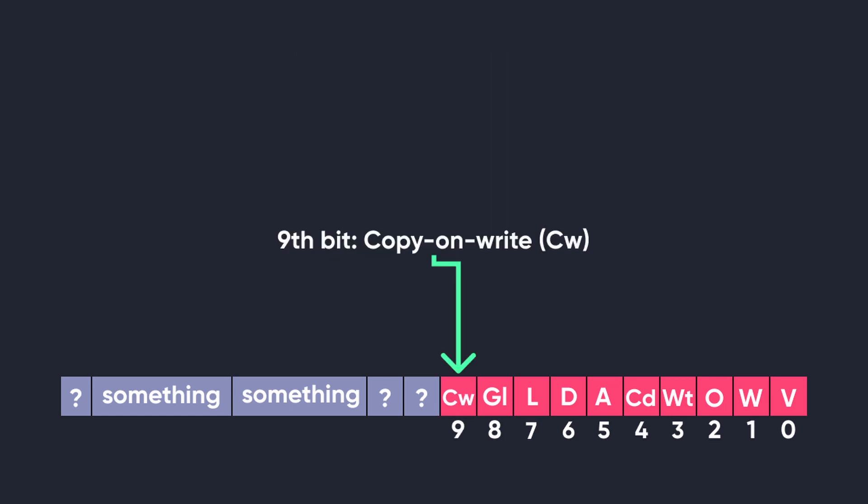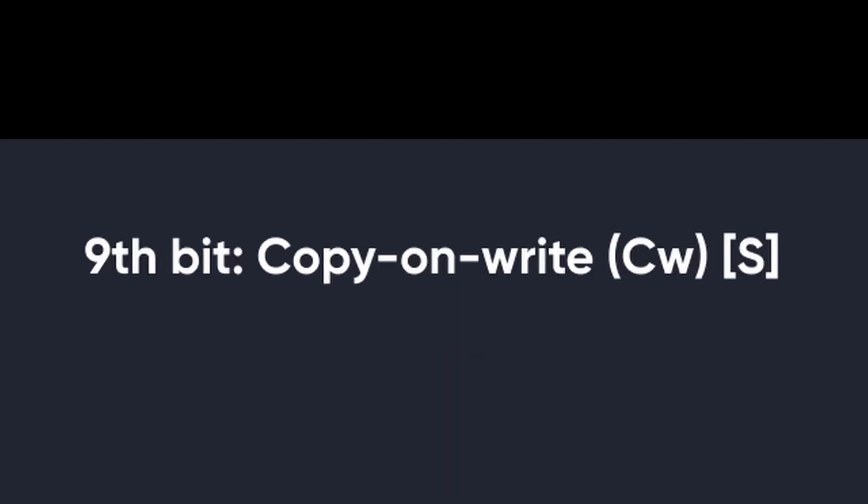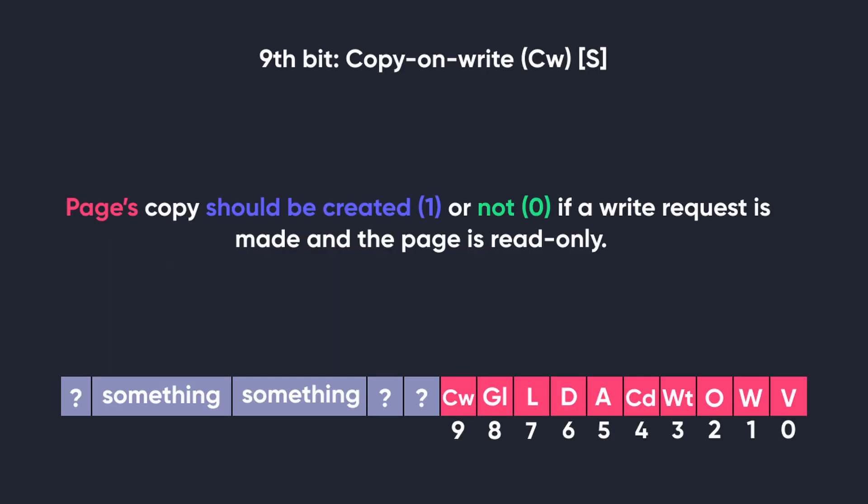The ninth bit is the copy-on-write bit. There is an extra S in brackets to denote that it is a software bit, meaning the MMU does not use this bit — rather, it is used by the operating system. This bit tells whether a copy of the page should be created before writing anything to it. If set to 1 and a process tries to write to the page, a copy of the page is created and everything is written into that copy, not the original page. If set to 0, the page can be directly written to.